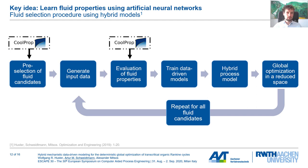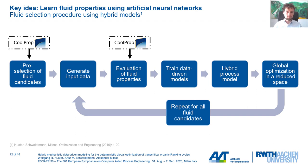When you can learn thermodynamics from a database, you can automate the full process for several fluids. We performed a pre-screening of fluids and found that 21 are suitable for transcritical operation. We then automatically generate input data, retrieve fluid properties from CoolProp, train neural networks, put them in the hybrid process model, perform global optimization in the reduced space, and repeat for all working fluid candidates. This allows us to automate the full process of working fluid selection for organic Rankine cycles.